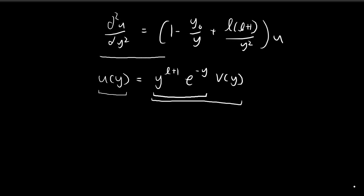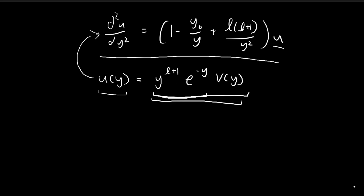Our ultimate goal is to find a function u of y that satisfies this differential equation, but this is still too difficult to solve directly. If we substitute this expression back into the differential equation, we will obtain a new differential equation, this time in terms of v of y, and that differential equation might be easier to solve. Once we find what v of y could be, we can just substitute it back into this expression — multiply it by these two functions — and that gives us u of y, which is ultimately the solution we're looking for.